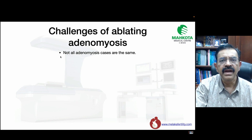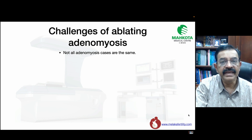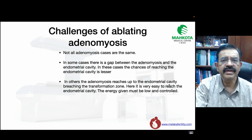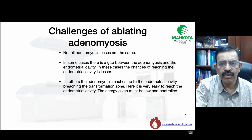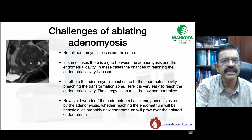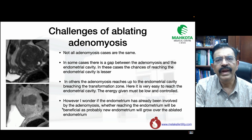What are the challenges in ablating adenomyosis? Not all cases are the same — smooth, cystic, or adenomyosis with lakes each require different approaches. In some cases, there is a gap between the adenomyosis and the endometrial cavity, making it less likely to reach the endometrium. However, in others the adenomyosis reaches the endometrial cavity and the transformation zone, making it very easy to inadvertently reach it. Energy given must be low and controlled. If adenomyosis has already involved the endometrium, new endometrium will likely grow over the ablated area.